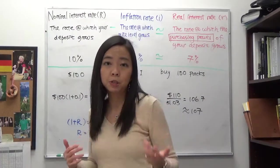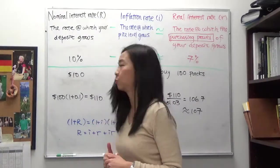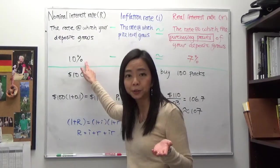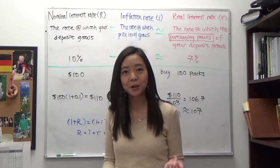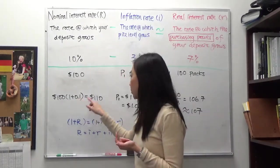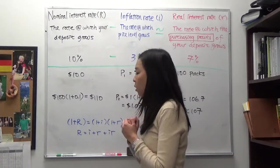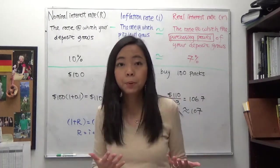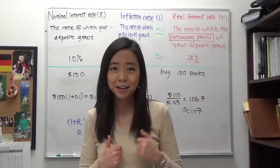But if you deposit your one hundred dollars in the bank, suppose the nominal interest rate is equal to ten percent. Then by the end of the year you can get your principal plus interest - there will be a hundred and ten bucks. And now how many packs of chalk can you buy? Because remember that's what we care about - how much more goods and services we can get from our deposit.